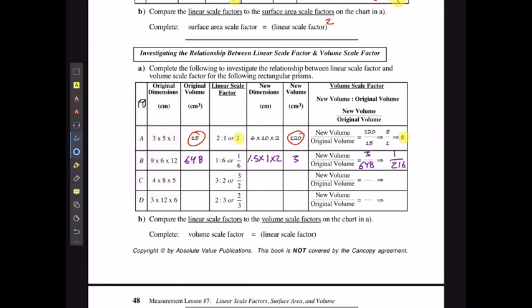4 by 8 by 5 is 160. And 6 by 12 by 7.5 is going to give me 540. 540 over 160 is gonna be the same as 27 over 8.